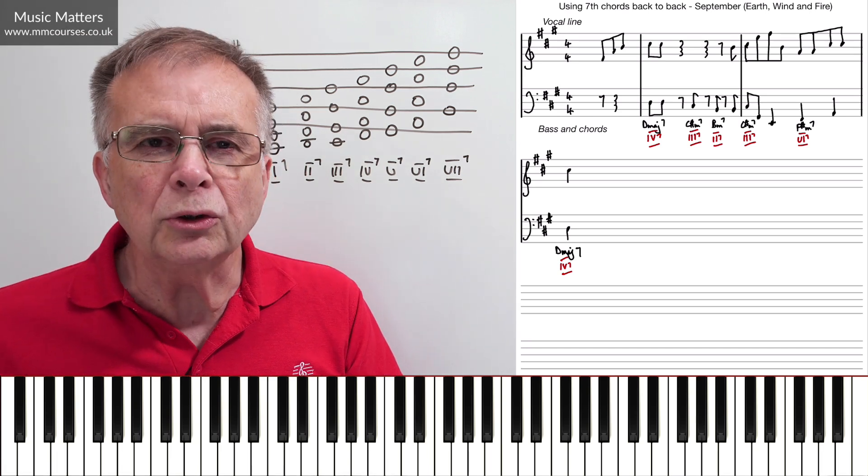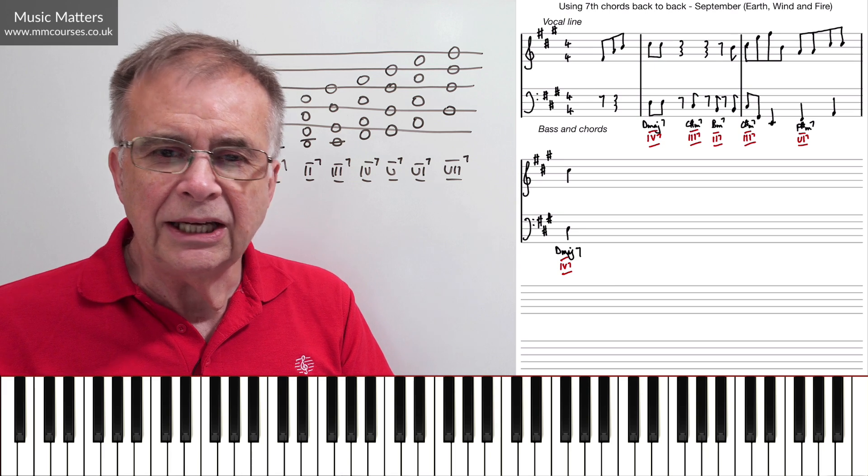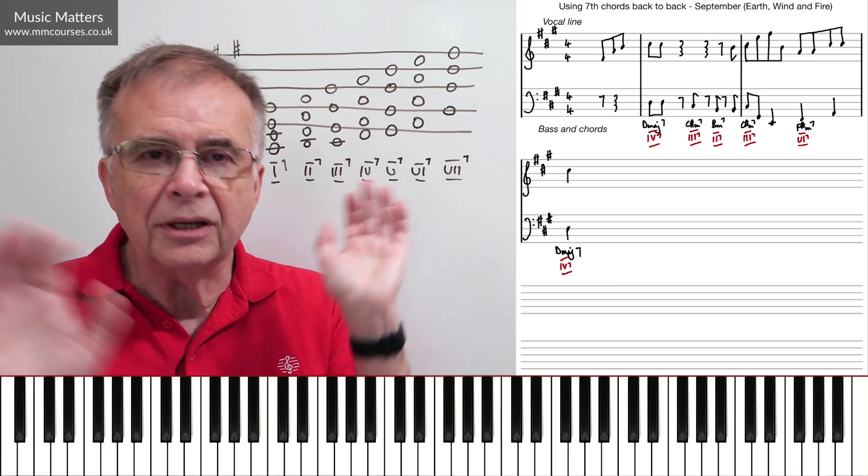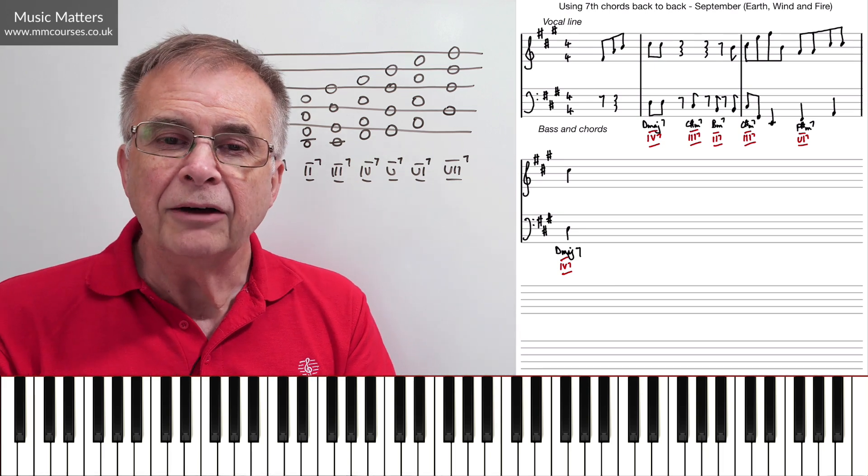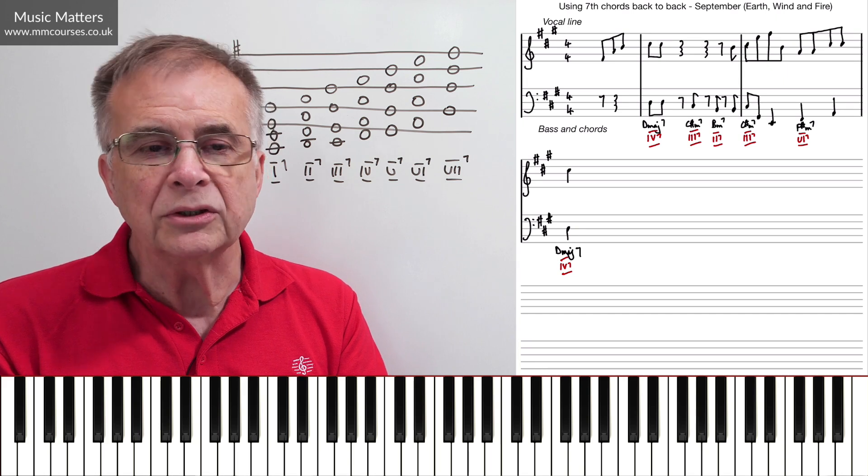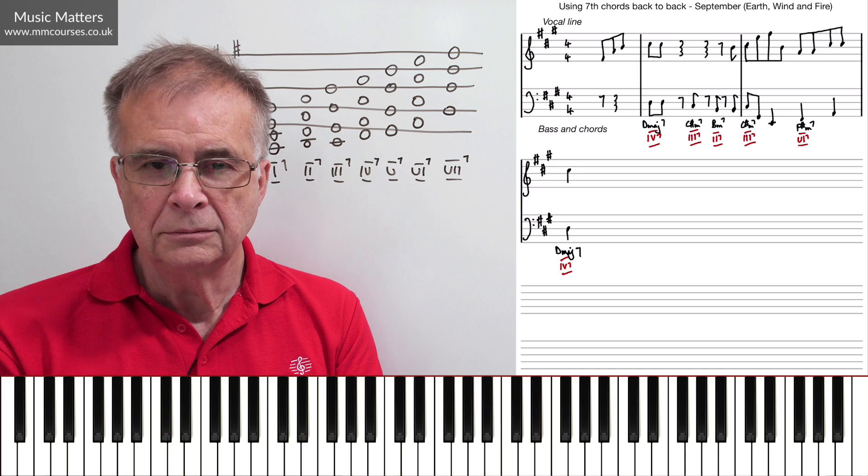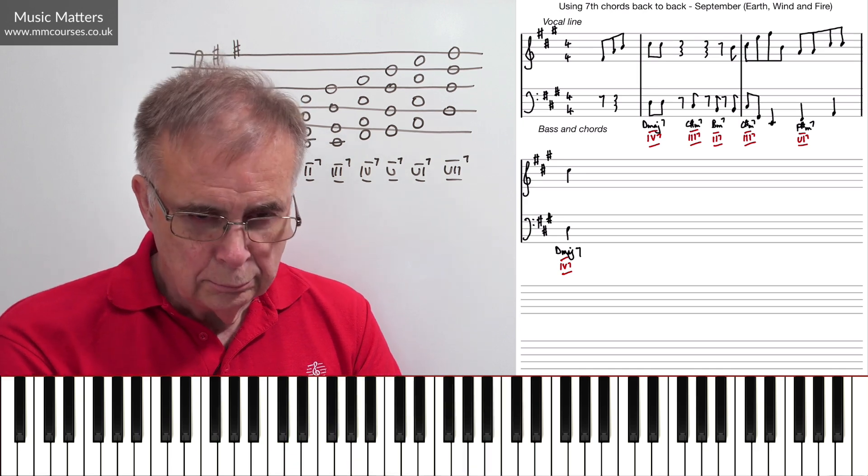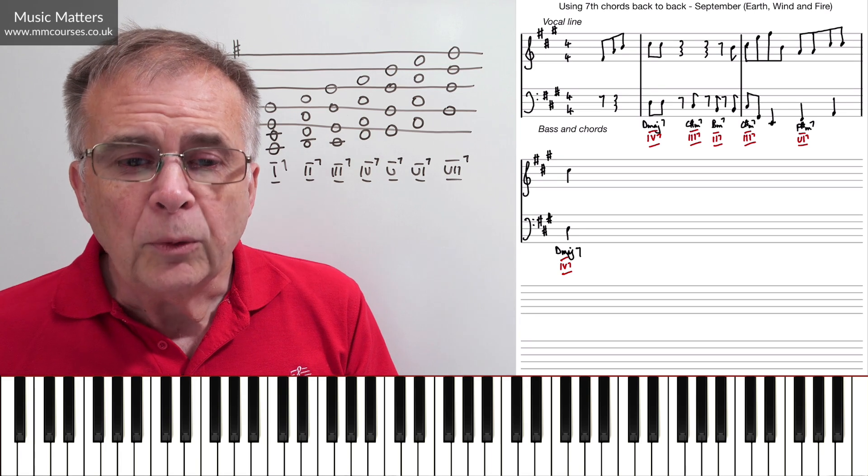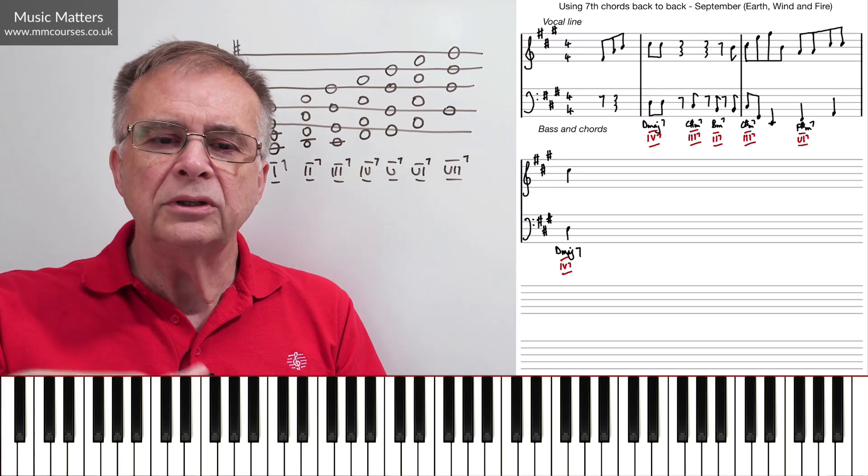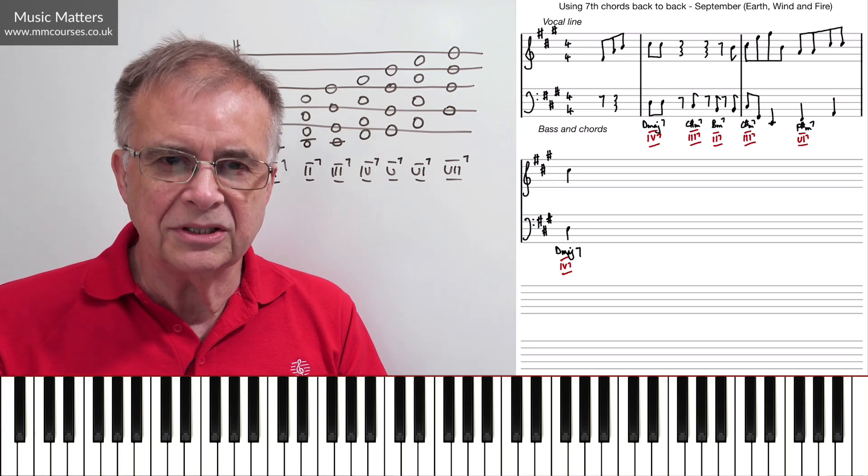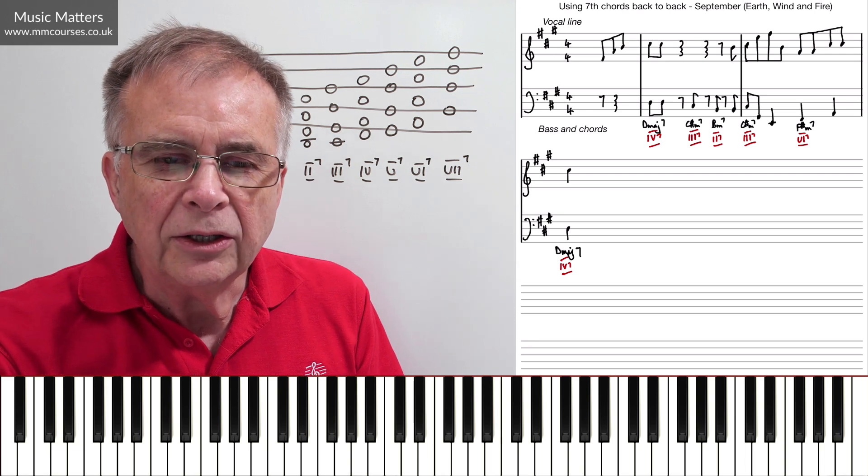Now, have a look at this score that we've got on the screen here. It's just literally a couple of bars, a couple of measures of an Earth, Wind and Fire song, September. Probably people know this song. But what's going on here, it's a whole load of this kind of back-to-back seventh stuff.